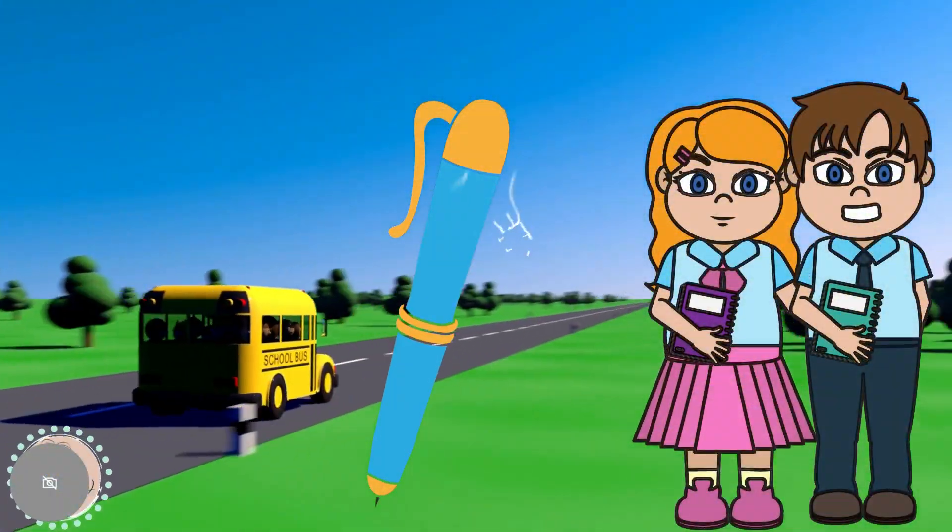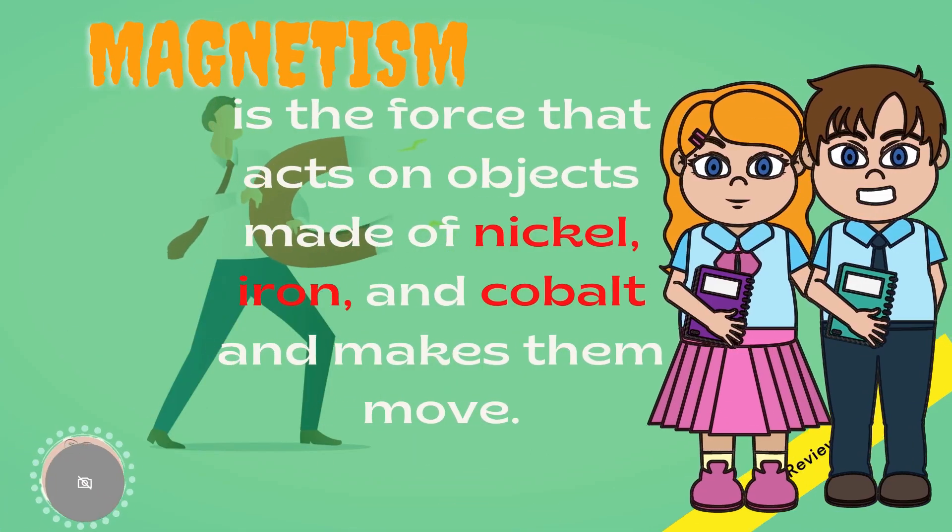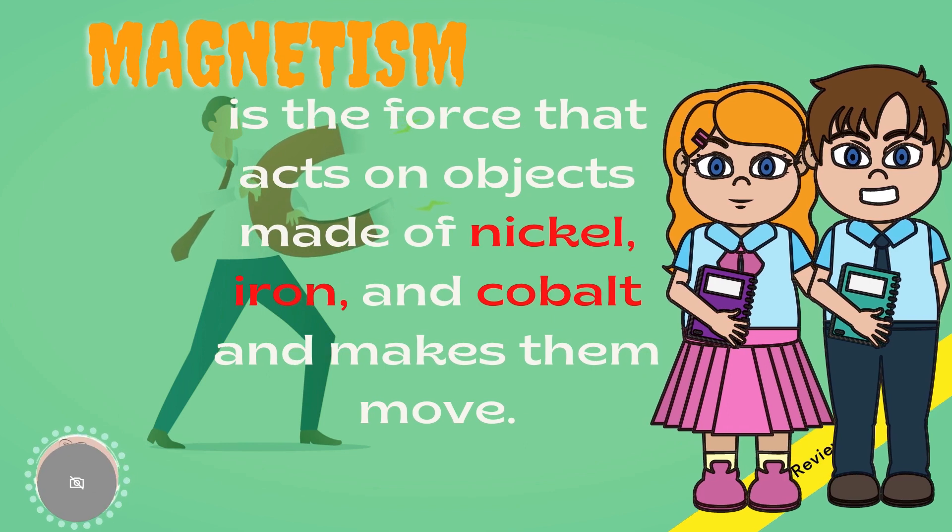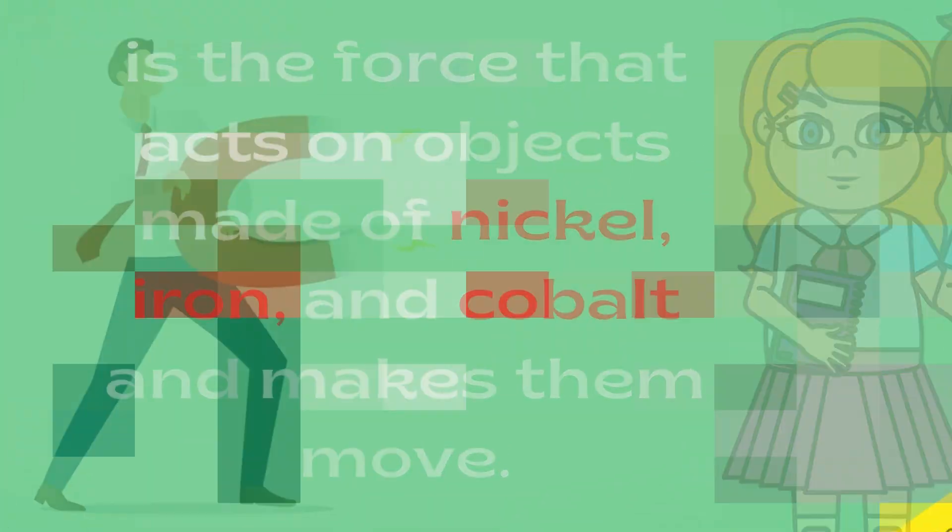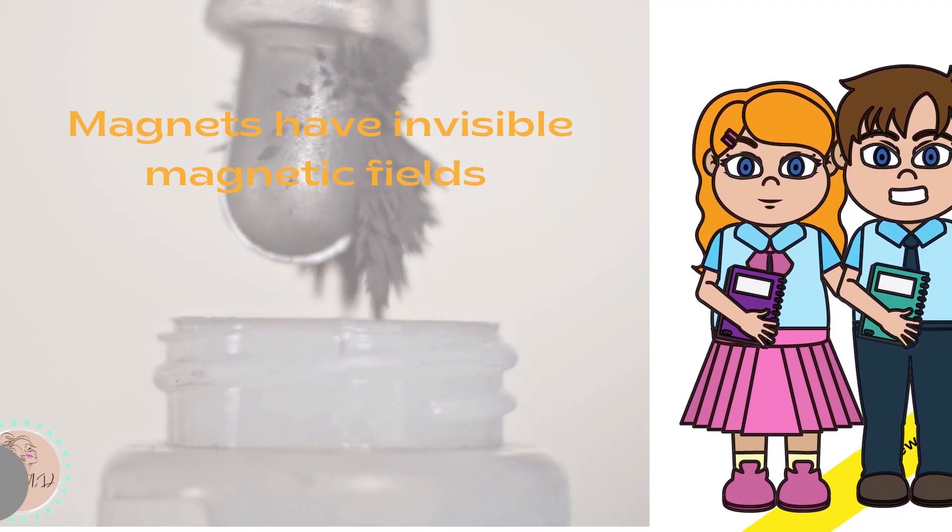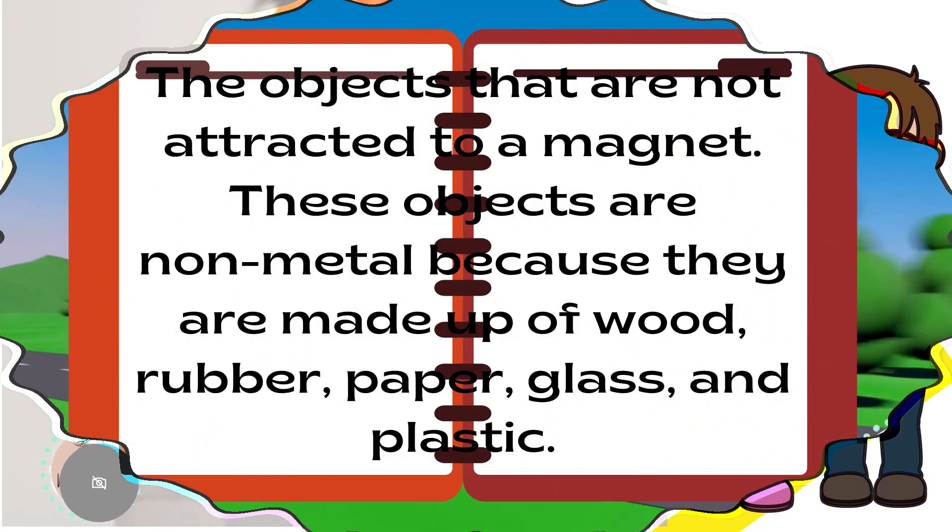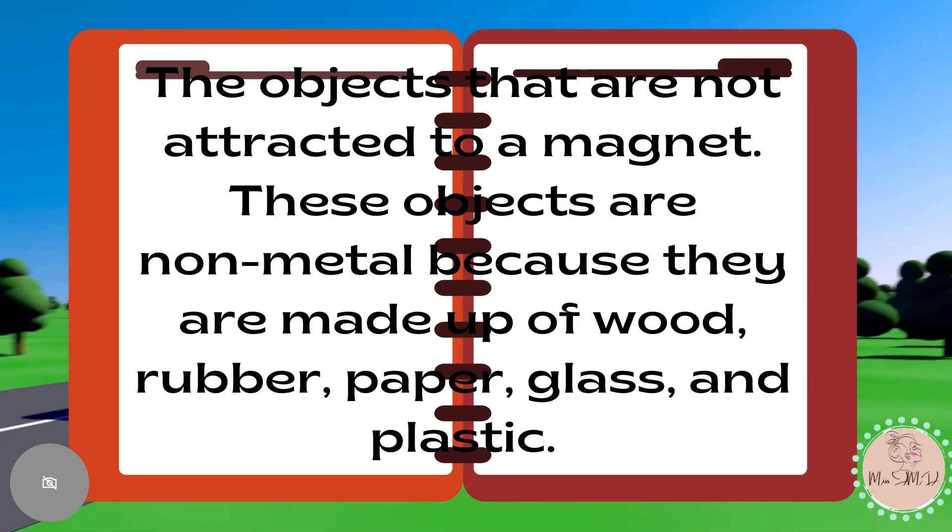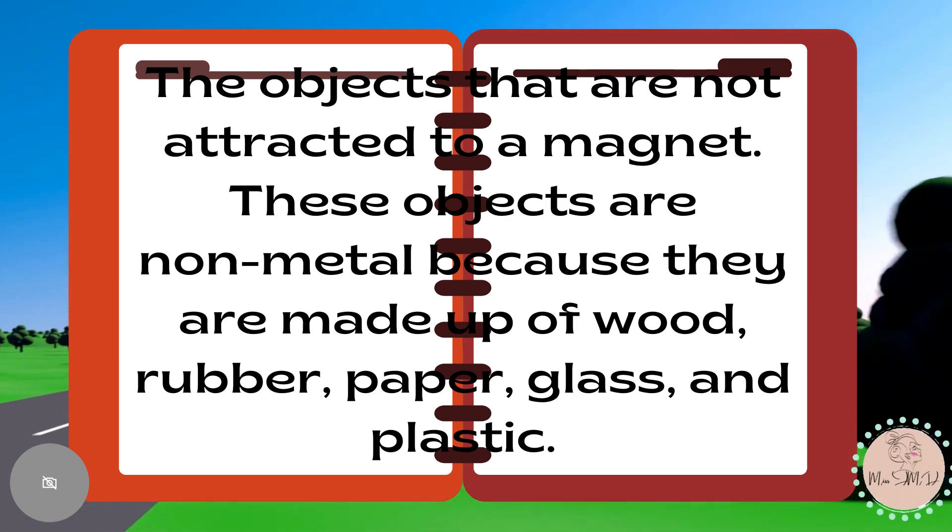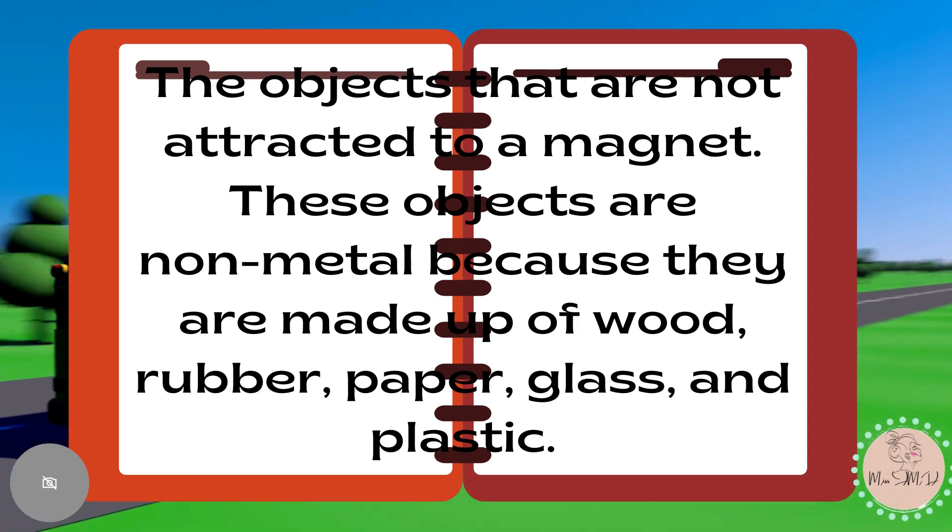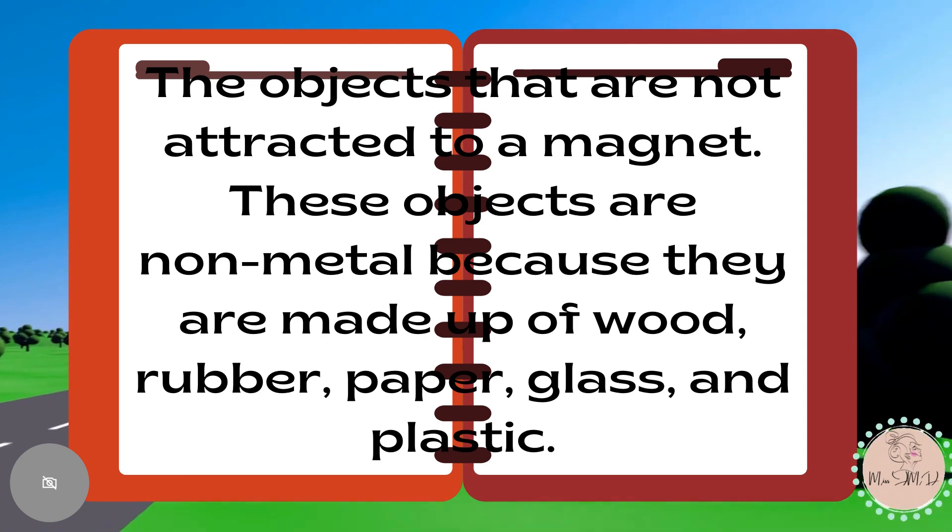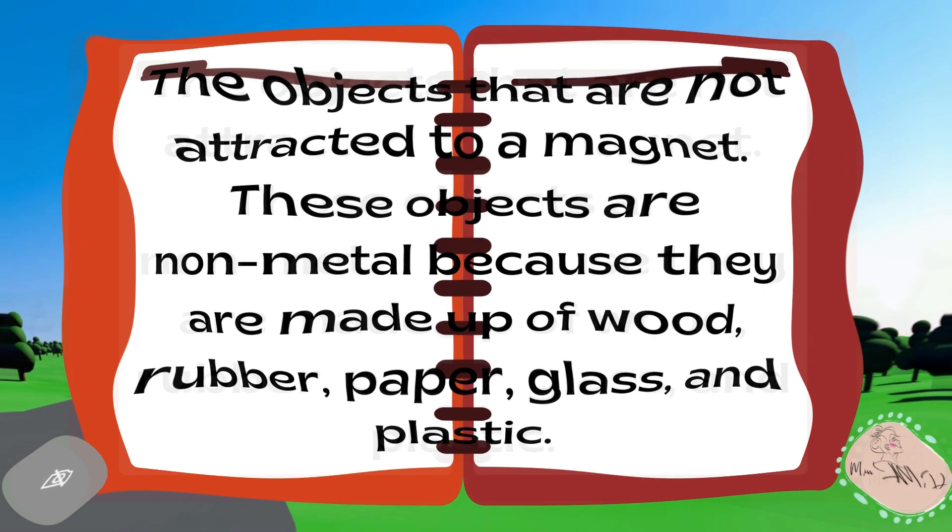Can you still recall our past lesson? Amazing! Last week, you learned about magnetism. Magnetism is the force that acts on objects made of nickel, iron, and cobalt, and makes them move. You also learned that magnets have invisible magnetic fields. Also, you were able to identify the objects that are not attracted to a magnet. These objects are non-metal because they are made up of wood, rubber, paper, glass, and plastic.